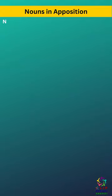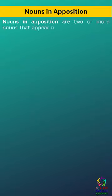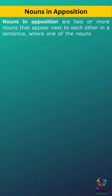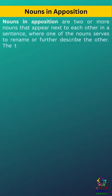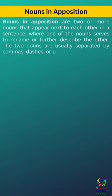Nouns in apposition are two or more nouns that appear next to each other in a sentence, where one of the nouns serves to rename or further describe the other. The two nouns are usually separated by commas, dashes, or parentheses.